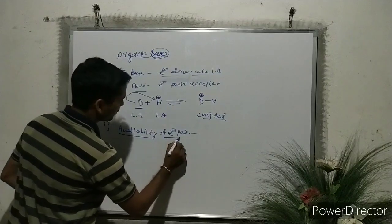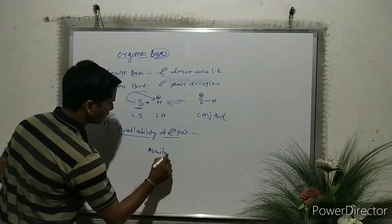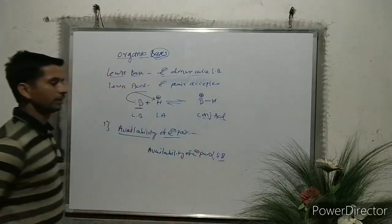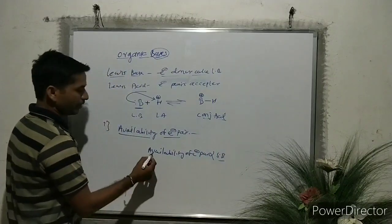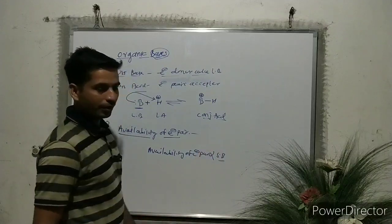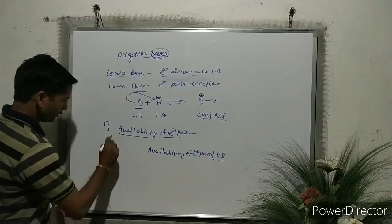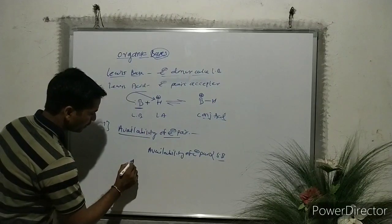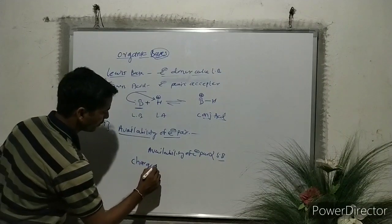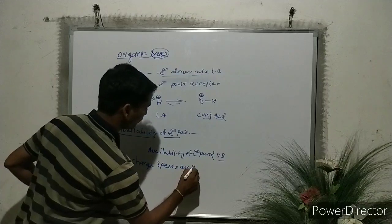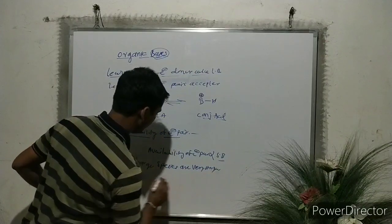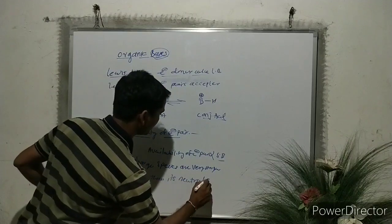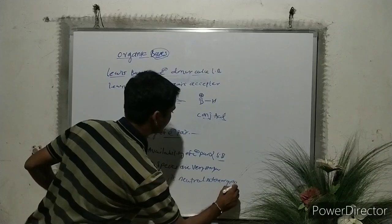We can say that availability of electron pair is directly proportional to the strength of the base. We can also say that charged species are stronger bases than their neutral atoms or groups. For example, OH⁻ is a stronger base than H₂O.